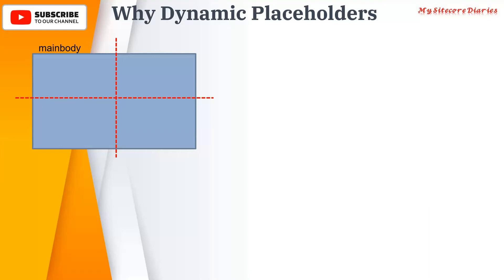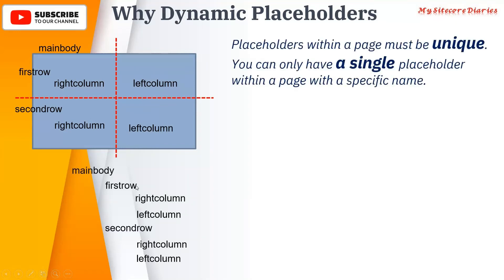Inside the body you want to add different components. The first placeholder is your 'main body', then you have a 'first row' and a 'second row'. Inside each row you have columns — named 'right column' and 'left column'. Now there is a problem: as we've seen, placeholders should have unique keys, meaning you can only have a single placeholder with the same name.